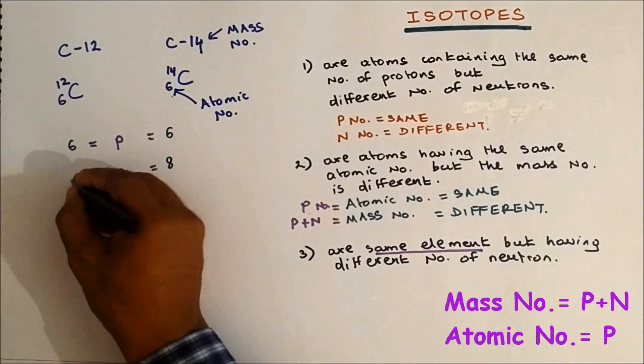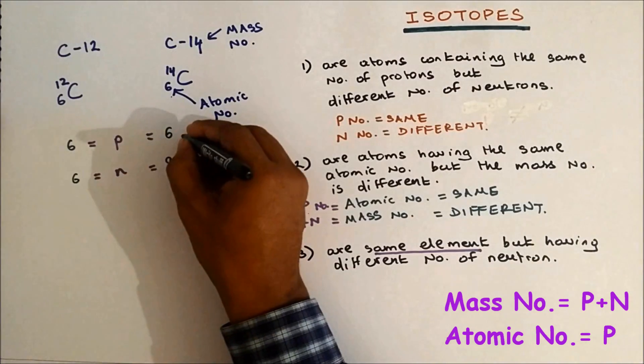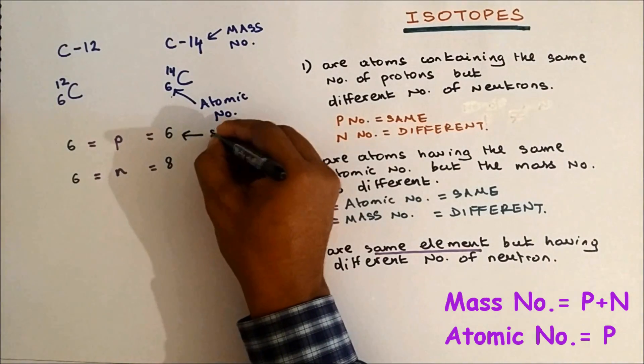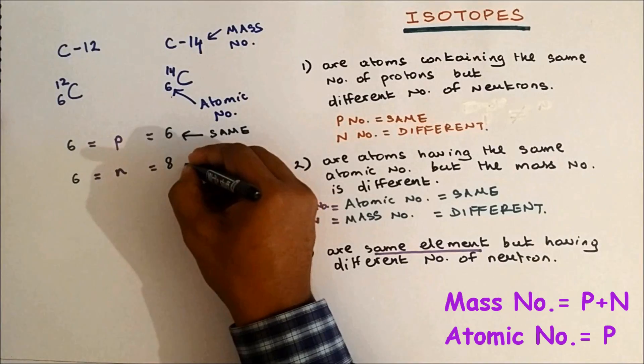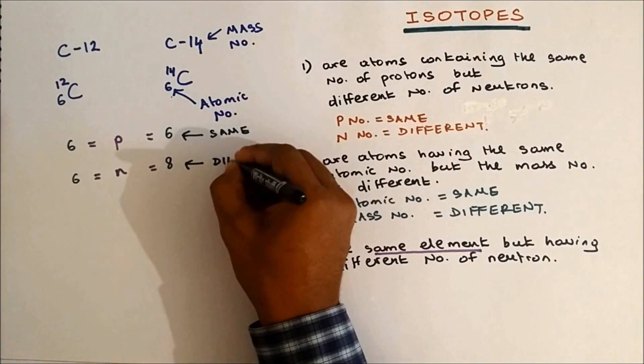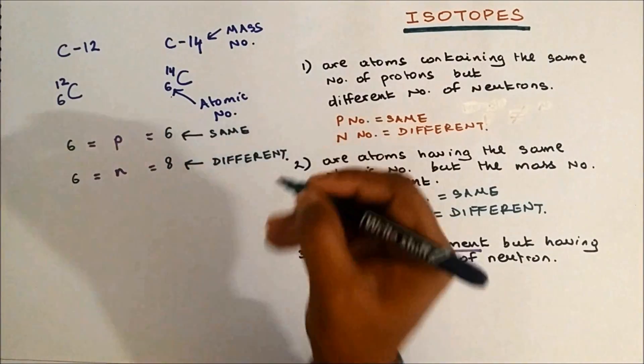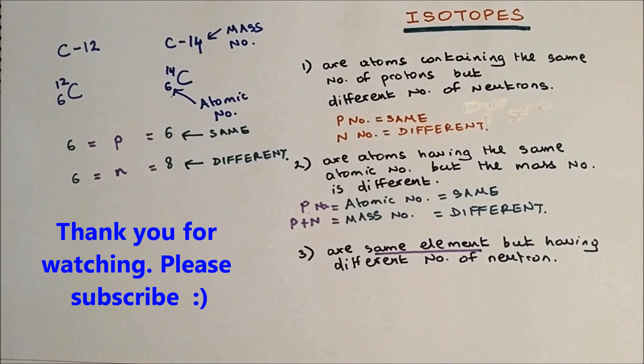So we can see that proton number is the same but neutron number is different. This is how you define isotopes in three different ways.